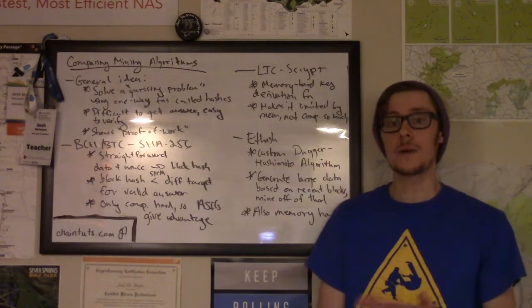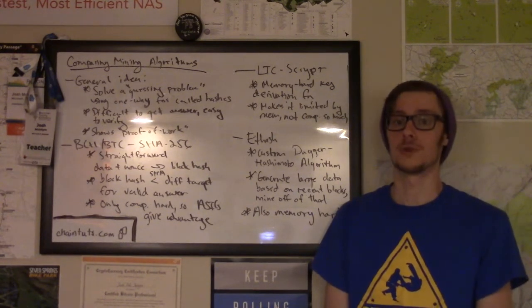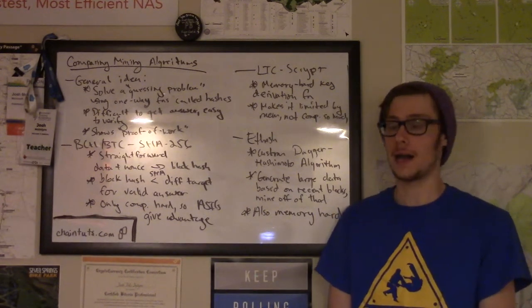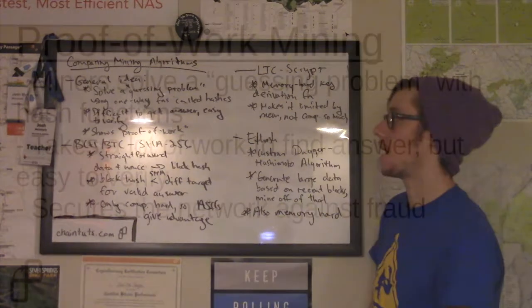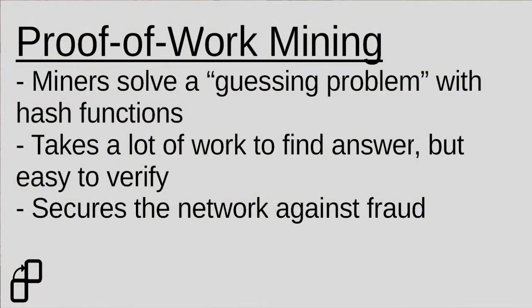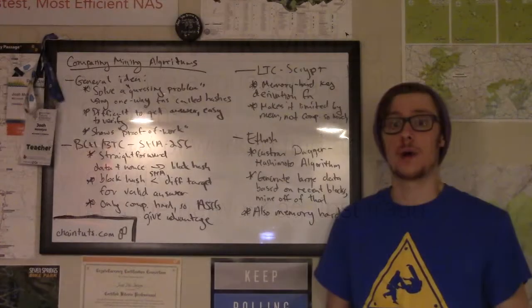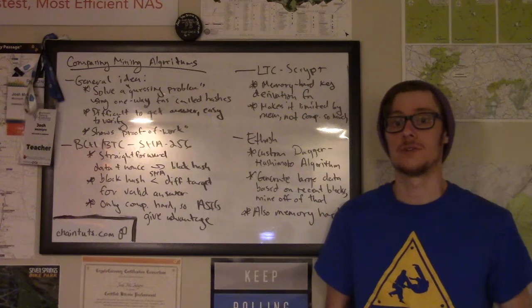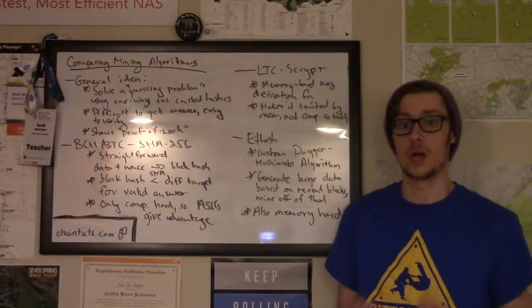First, let's talk about the general idea behind proof-of-work mining. What proof-of-work mining does is it has different nodes across the network that want to contribute to network security run essentially a guessing problem using one-way functions called hash functions. There's a sort of mathematical problem presented to the nodes involving some block data.